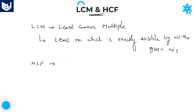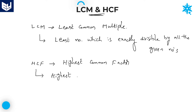The full form of HCF is Highest Common Factor. HCF is nothing but the highest number — or greatest number, or largest number, whatever you call it — which divides all the given numbers. That is called HCF.